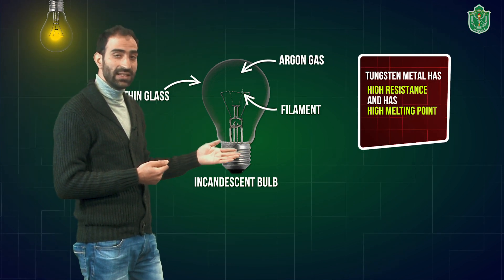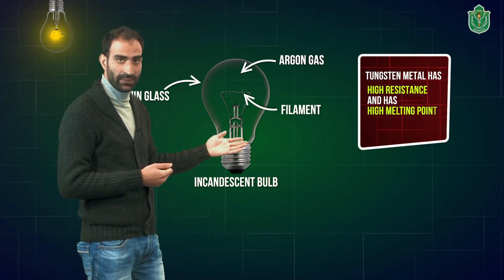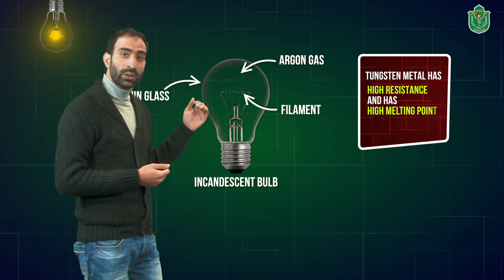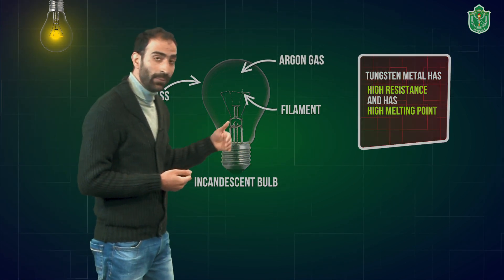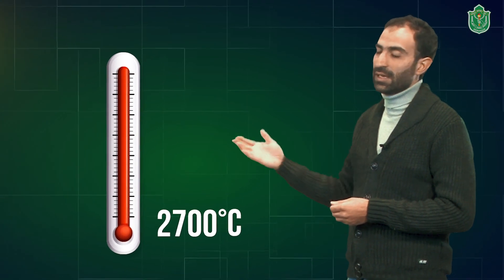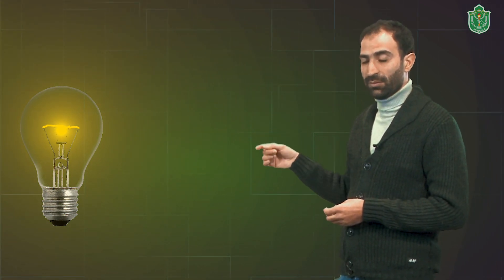Tungsten metal offers a very high resistance and melts at very high temperatures. As the electricity passes through this filament, the filament quickly heats up — to more than 2500 degrees Celsius — and at this temperature the tungsten filament starts glowing and we get light from the bulb. The argon gas filled in the bulb protects the filament and does not let it break down. This is how an electric bulb works.